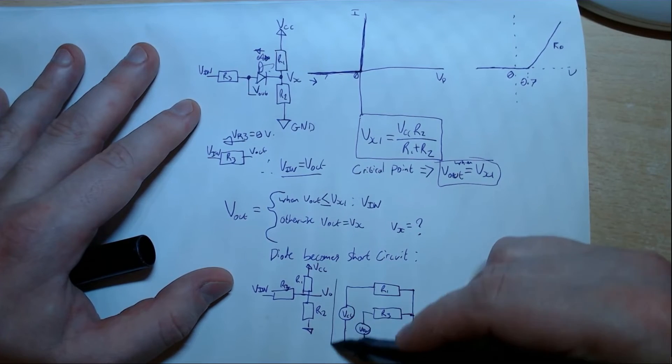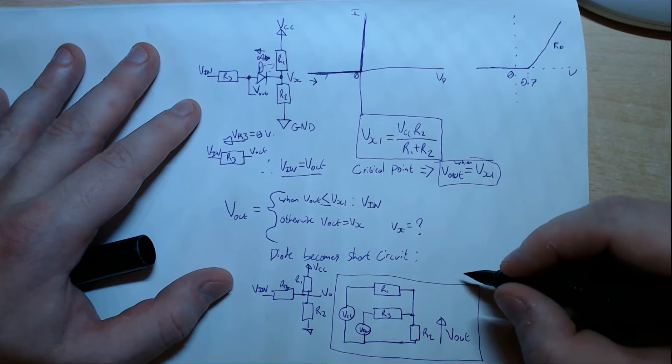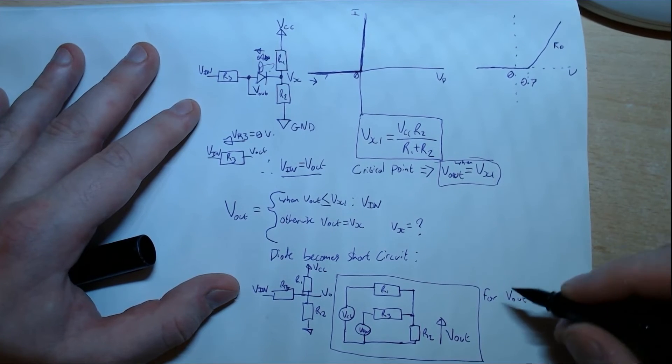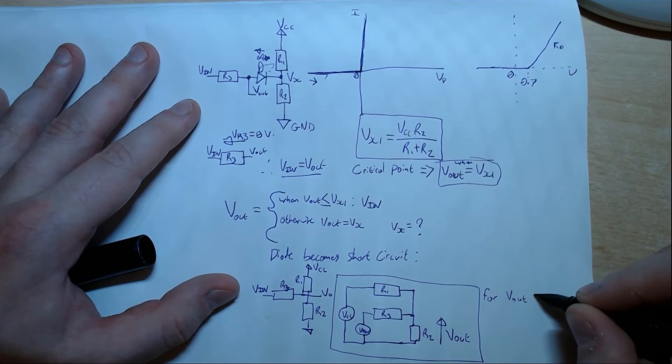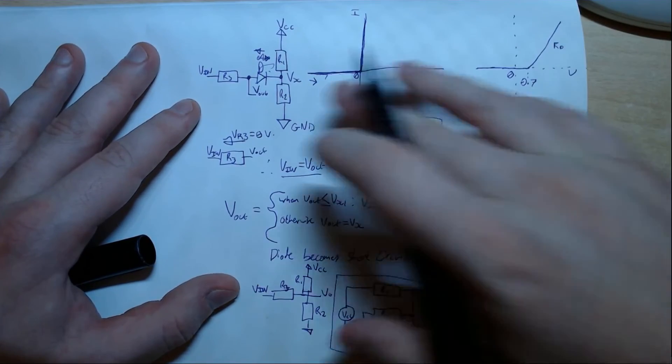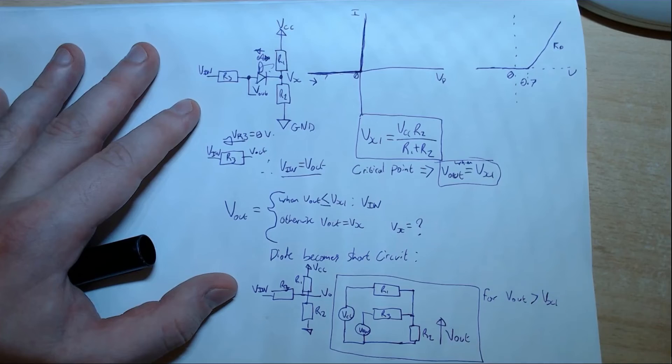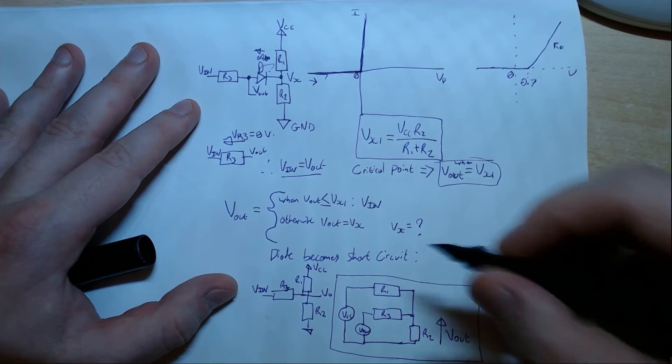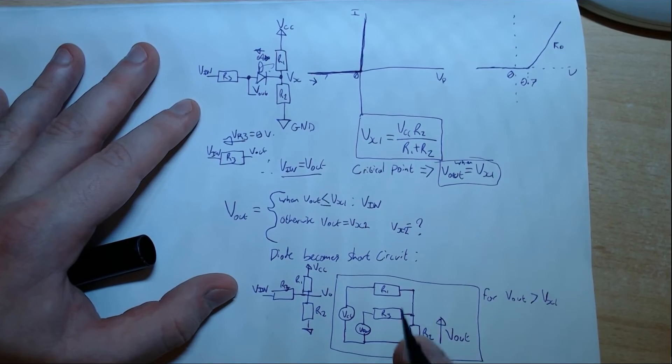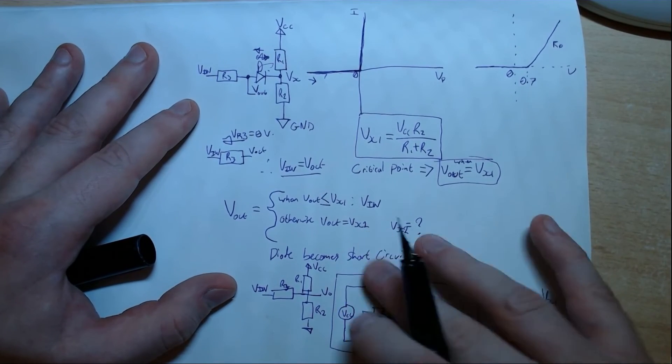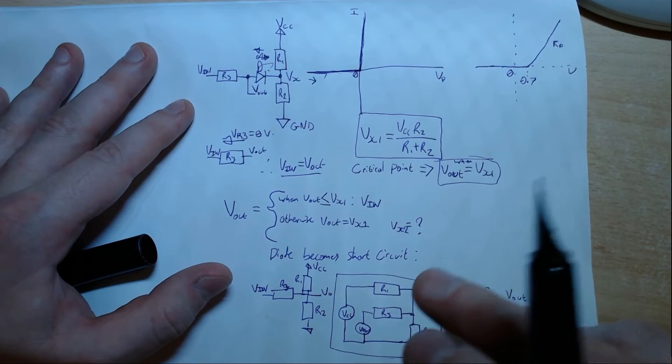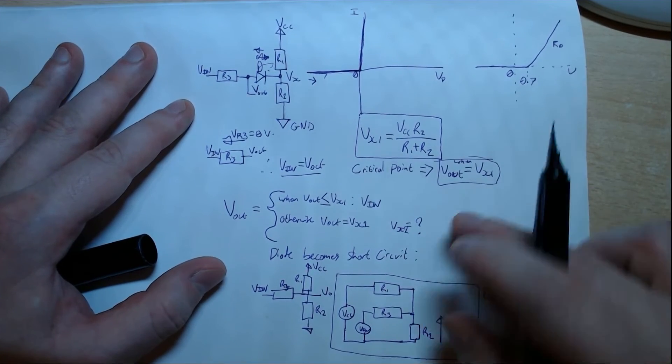For when VOUT is greater than VX1. So remember VX1 is different from VX. VX1 is a specific case when this diode is open circuit. But here this diode has become short circuit, so VX is no longer VX1. Let's call it VX2. What's VX2? Well this is how we work out VX2. So we can solve this equation with a variety of methods. We've got nodes there, we could do nodal analysis, we could do loop analysis. We could do Norton Thevenin, doesn't make much sense for this application. We could do superposition. I quite like superposition for this one.